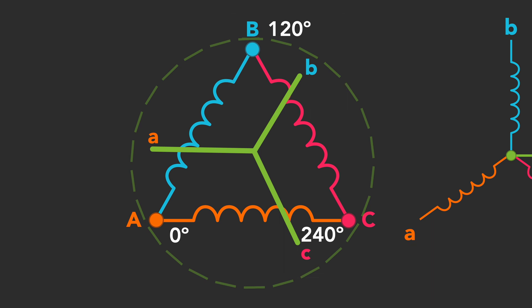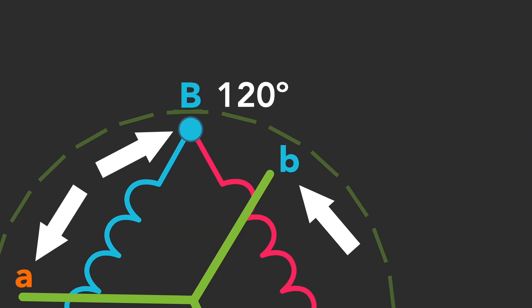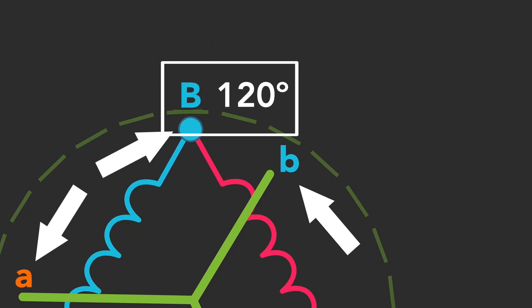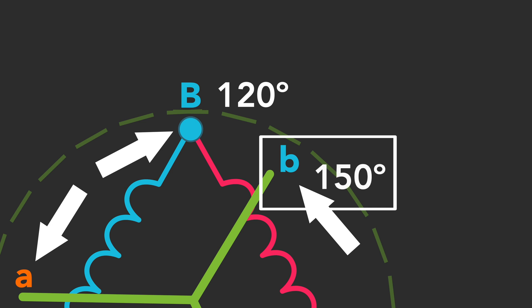However, the phase relationship between similar points of each connection represents a shift of 30 degrees. For example, point B on the delta connection is positioned at 120 degrees. The corresponding point B on the Y connection is positioned at 150 degrees. The difference between the points represents a phase shift of 30 degrees.